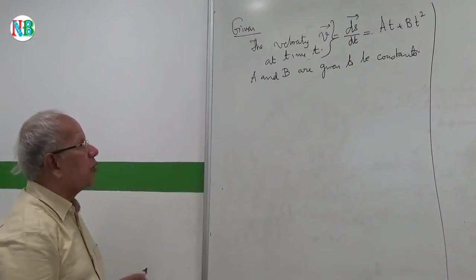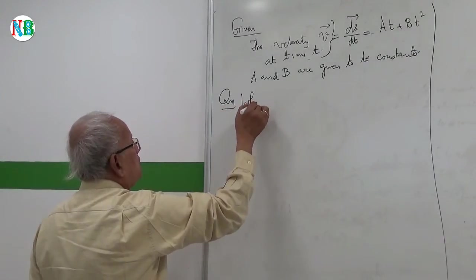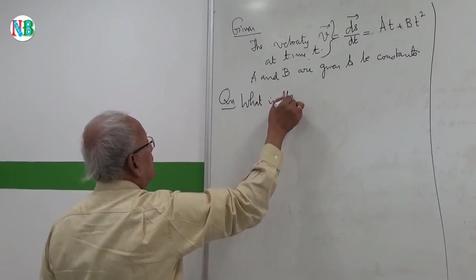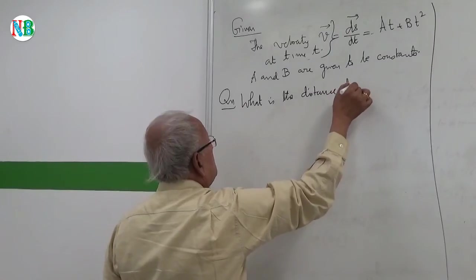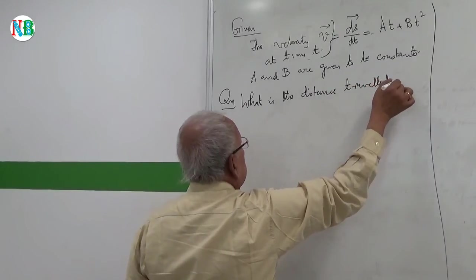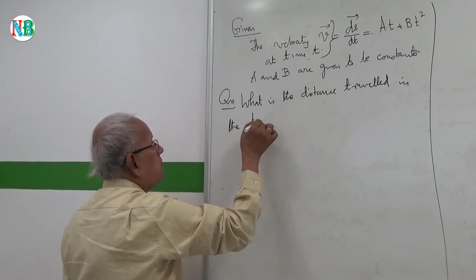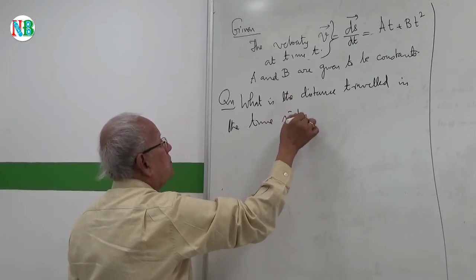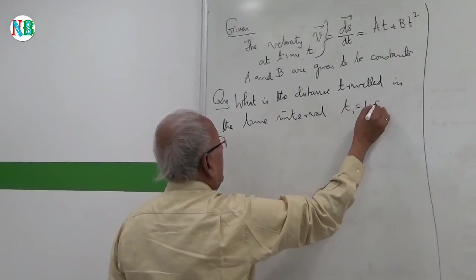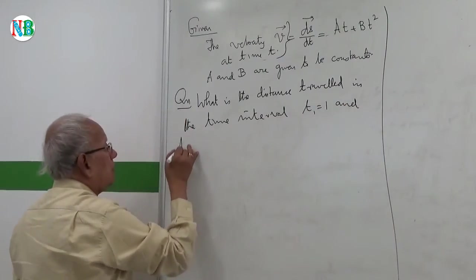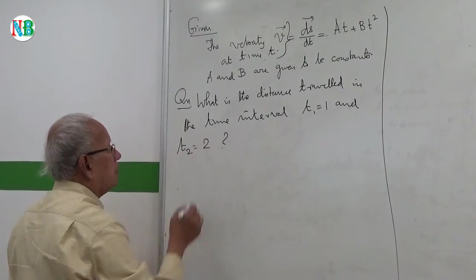Okay. Now the question is, what is the distance traveled in the time interval T1 equals 1 and T2 equals 2? Do you understand the problem?